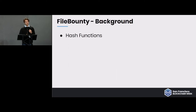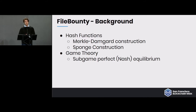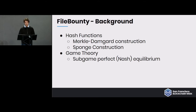The background needed to understand File Bounty includes hash functions, in particular the Merkle-Damgård construction. There is also game theory: the protocol is proven to have a sub-game perfect Nash equilibrium, which means that the correct course of action for actors is proven to be a Nash equilibrium — the course that rational actors will take.